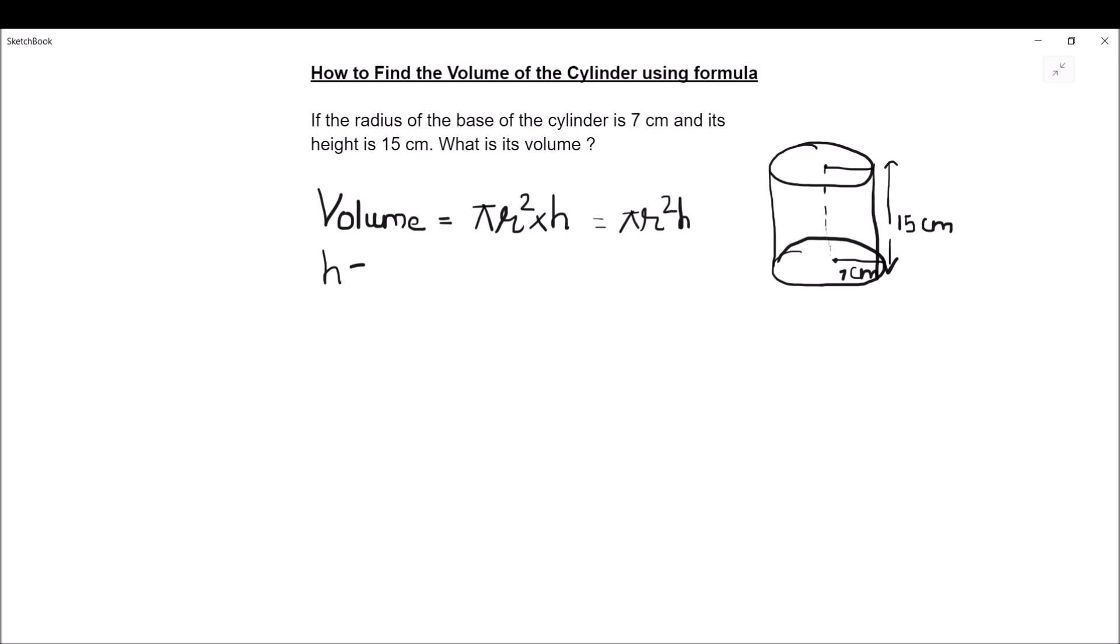We have been given the height of the cylinder as 15 cm and radius r as 7 cm. So let us now substitute the values in our formula, which is πr²h.